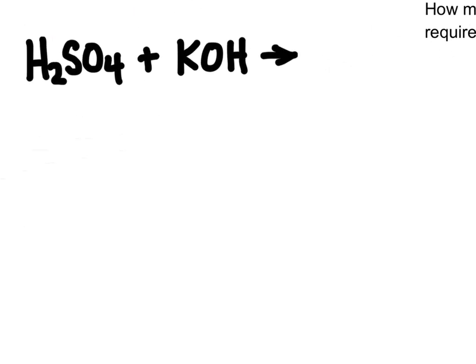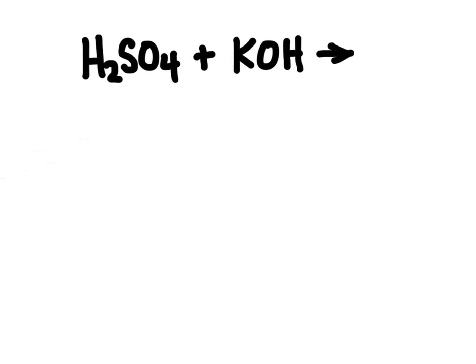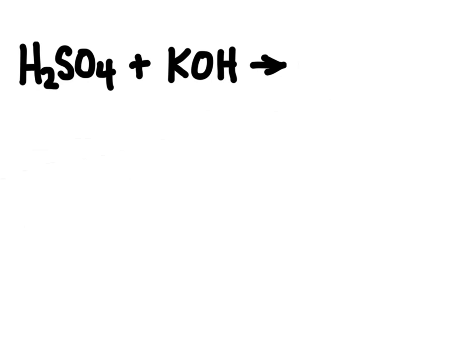Here's another example. Now in this example, we have a diprotic acid, that is one with two ionizable hydrogens, that's this right here. So this is sulfuric acid that's going to react with potassium hydroxide. The same thing's going to happen where we'll have the hydrogen switching places with that metal that's in front.